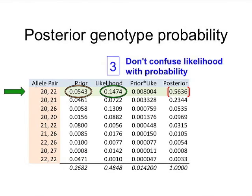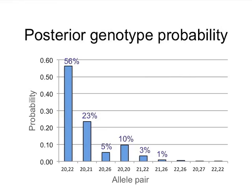That gives you the posterior probability. Based on this calculation — multiplying the prior column times the likelihood column to get an intermediate product and then dividing to make it all add up to one — that gives you the posterior distribution. In this case for allele pair 20-22 for a minor contributor to FGA, the number is around 56%. There's 56% for 20-22 on the left with other possibilities. Those numbers do add up to one because it is a probability. That's how probabilistic genotyping works.